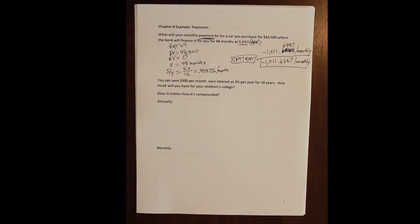Okay, so let's work a more personalized example here. Let's say that you can save $500 per month. You can earn interest on that savings at 3% per year for 18 years. How much would you have for, let's say, a kid's college account, or saving for retirement, or a personal investment account? All these things would work the same way.